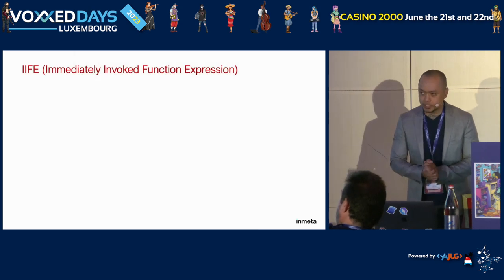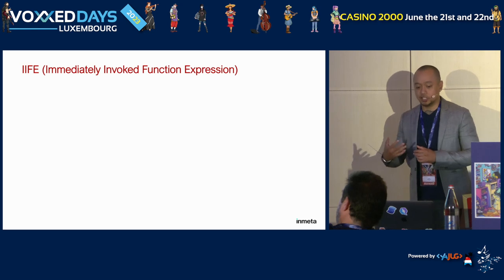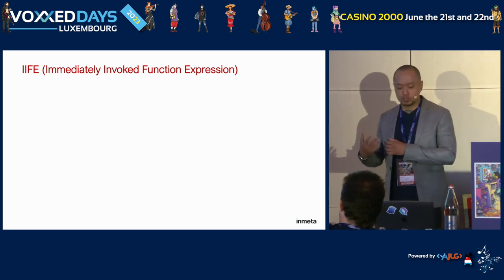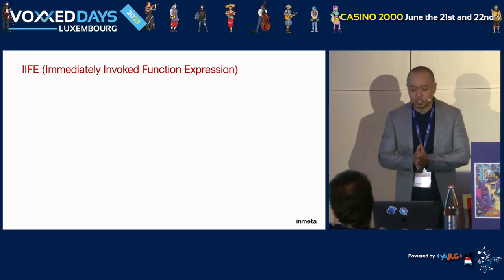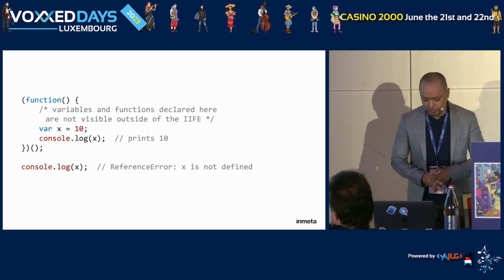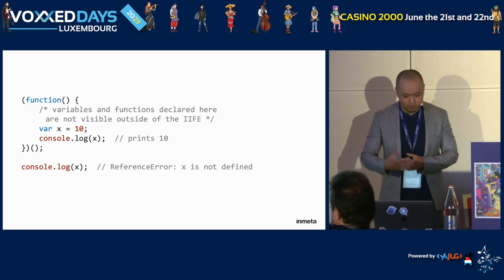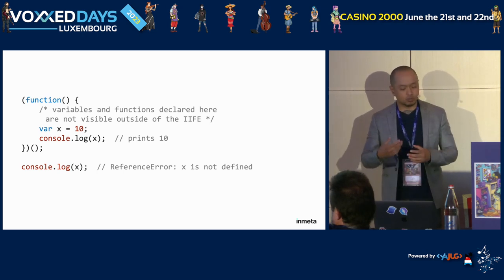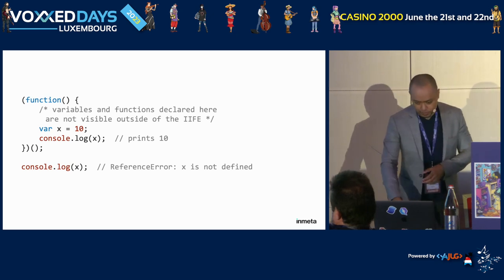First we had the IIFE — Immediately Invoked Function Expression. It mimics a module scope, can hide variables, and is self-contained. IIFEs helped us create module patterns back in the day. In this example, the x variable is not visible outside of the IIFE, so trying to log it outside results in a reference error.